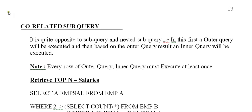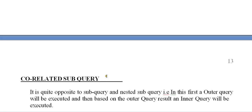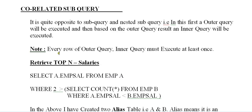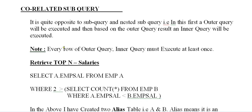Now we'll look at correlated subqueries. We use a correlated subquery when your conditions might exceed 15 nested subqueries, or when writing multiple subqueries becomes too complex. Correlated subqueries overcome both the complexity and the 15-subquery restriction of nested subqueries.